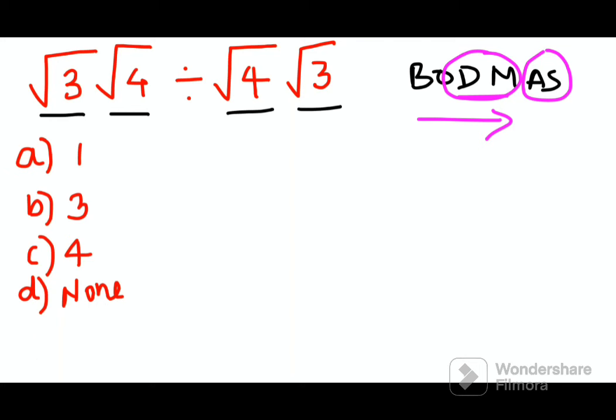So now what we have over here is see root 3 and then we have root 4 divided by root 4. So that becomes what, so first let's just write this properly. So that to avoid confusion we'll write this properly.